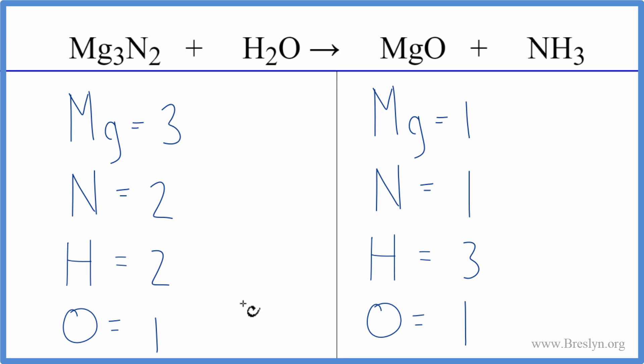Let's leave the hydrogens until last. Why don't we just fix the magnesium and see what that does. So we have three here and one here. We'll put a coefficient of three in front of the MgO. One times three. That'll give us three magnesium atoms.